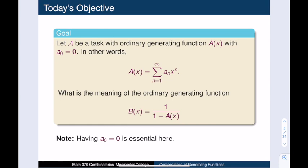Here is today's objective. We start with an ordinary generating function a, whose constant term a0 is 0. We will uncover the meaning of the following ordinary generating function: b is equal to 1 over 1 minus a. Note that forcing the constant term to be 0 is an essential part of this result. Once we understand how this theorem works, we will see why this technical requirement actually makes complete sense.